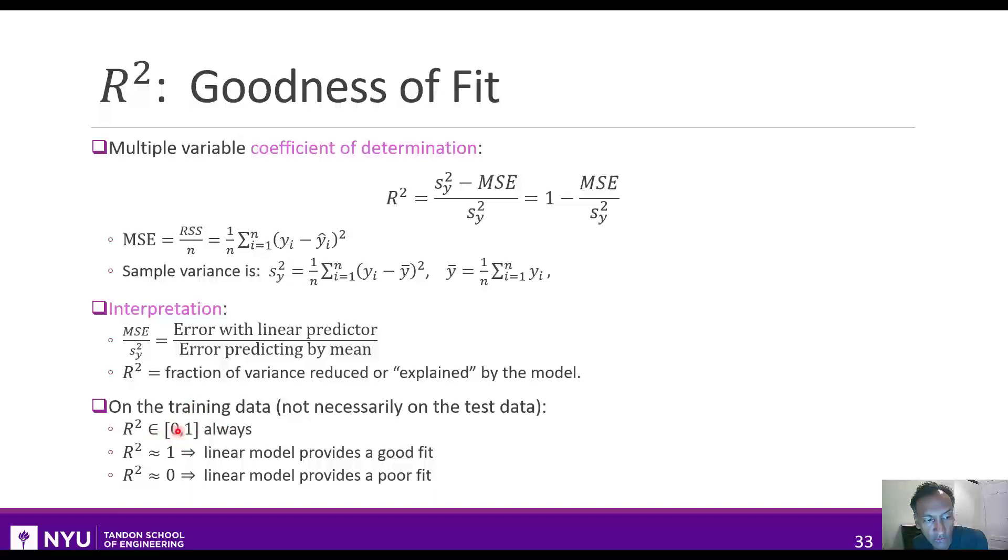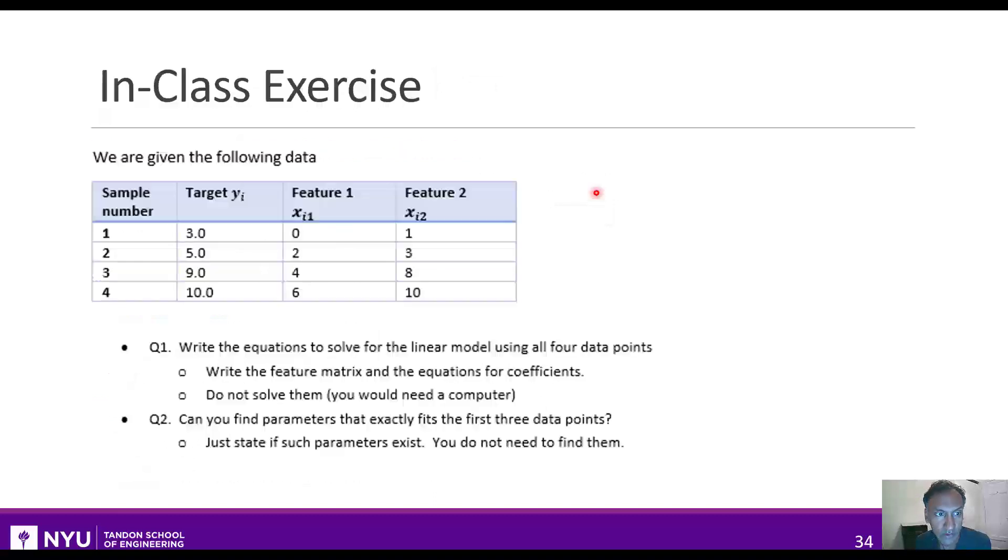Now, on the training data, you can just show some simple mathematical properties. That one, that the r squared value is always between 0 and 1, and when it's 1, that means this value is close to 0, which means the mean squared error, or the relative mean squared error, is small, and that means the linear model provides a good fit. On the other hand, when r squared is close to 0, that means this quantity is close to 1, which means that the error in the model is high, or that the linear predictor did not offer much more than just ignoring the variables entirely.